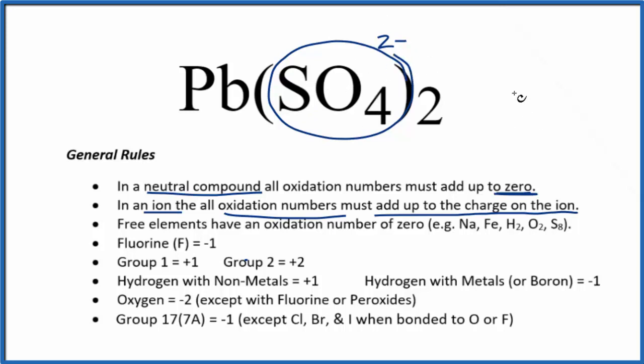Since we have 2 of these, that gives us a minus 4. So in order for this all to add up to zero, the lead has to be a positive 4. So we have 2 times the minus 2, that's the minus 4, plus 4, it all adds up to zero.